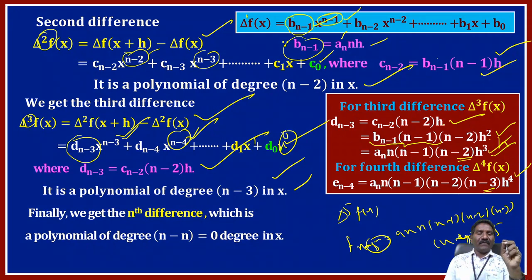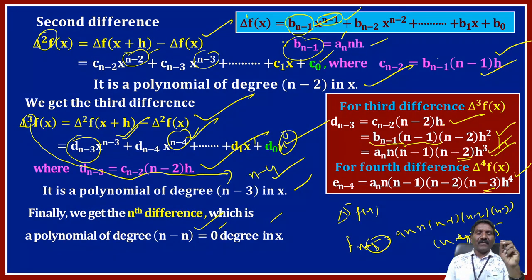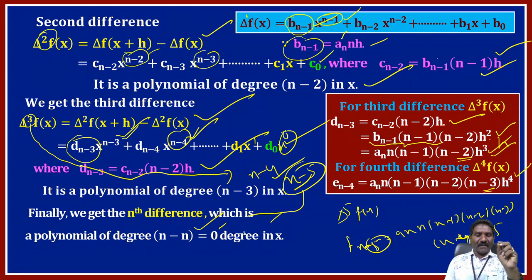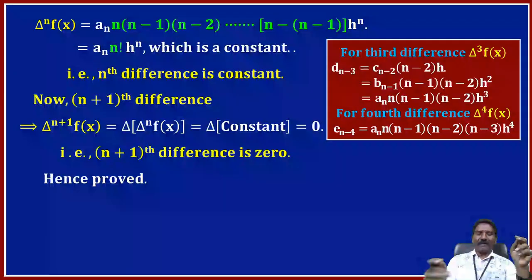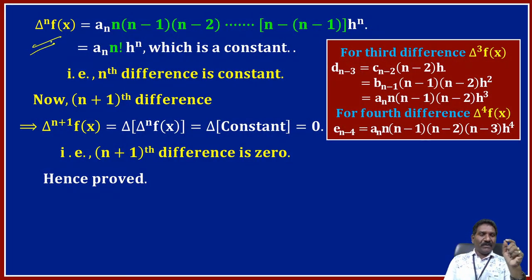Finally, we get the nth difference, which is a polynomial of degree n minus n equals 0 in x. Del cubed f of x is degree n minus 3; del power 4 is degree n minus 4; del power 5 is degree n minus 5; and del power n is degree n minus n equals 0 in x. So del power n of f of x is a polynomial of degree 0.